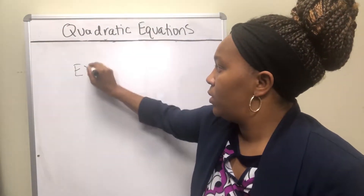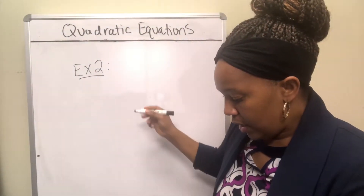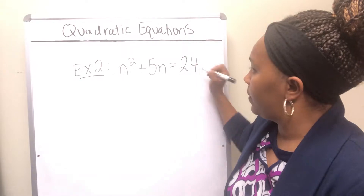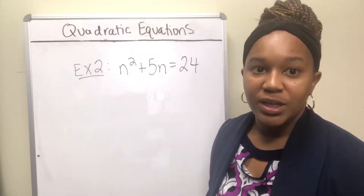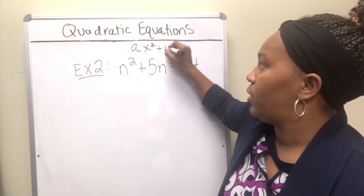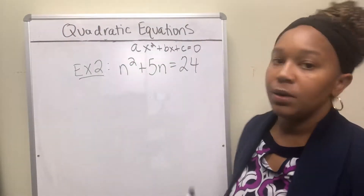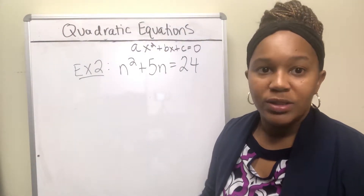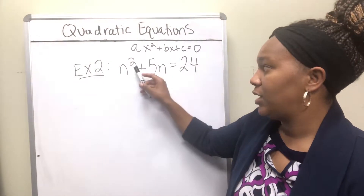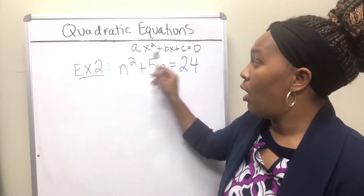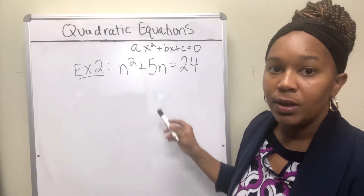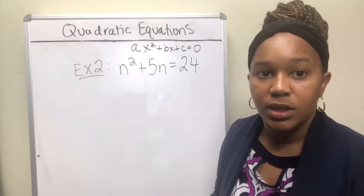Example two: we want to solve n squared plus 5n equals 24. Recall that a quadratic equation is of the form ax squared plus bx plus c equals zero — there has to be an equal sign, one variable, and a highest exponent of two. All of that exists here. The only thing missing is that it's not in standard form — it has to have zero on one side. So whenever you solve quadratic equations, you want to get zero on one side.